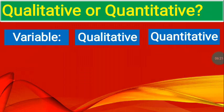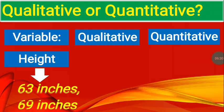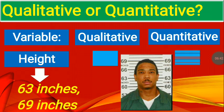Next. The same, we're talking about height. And this time, we use numbers. You have 63 inches and 69 inches, for instance. The question is, is it qualitative or quantitative? What do you think? It's quantitative.